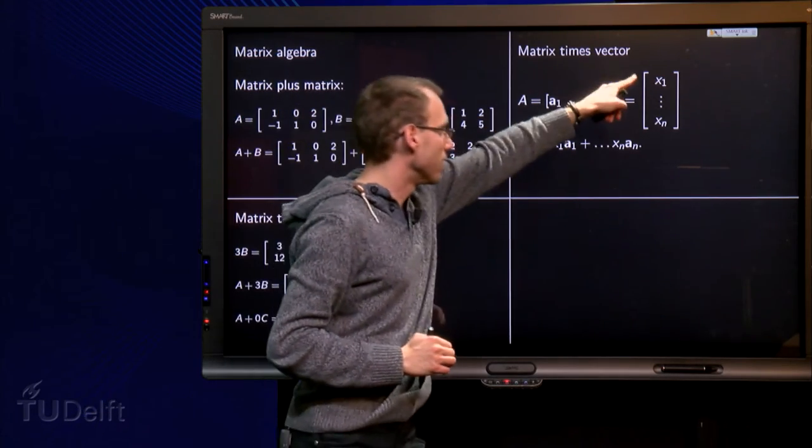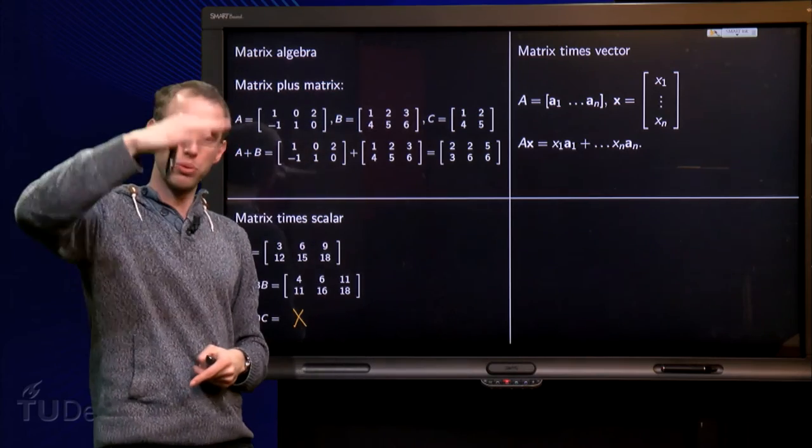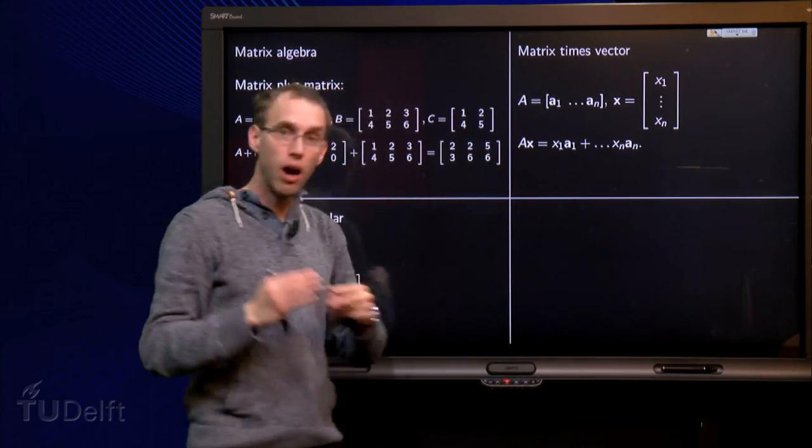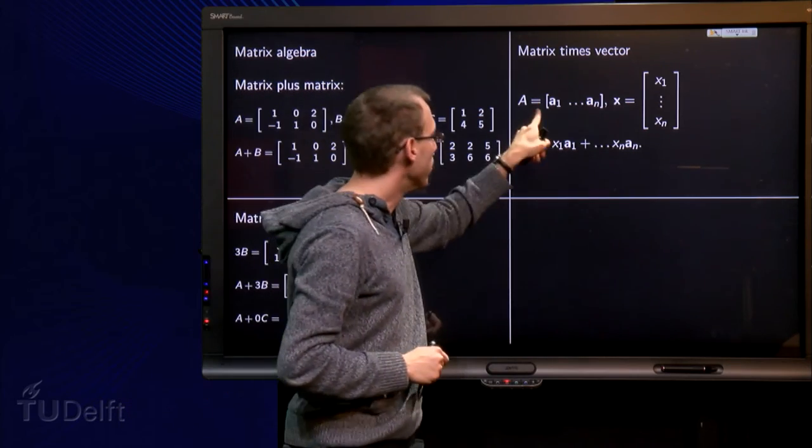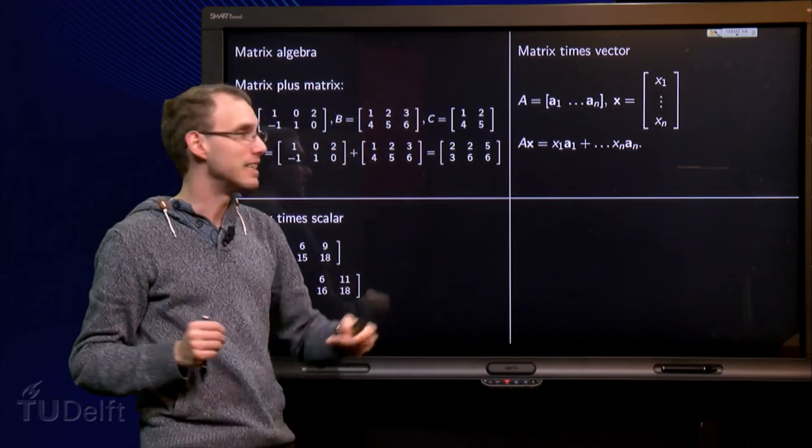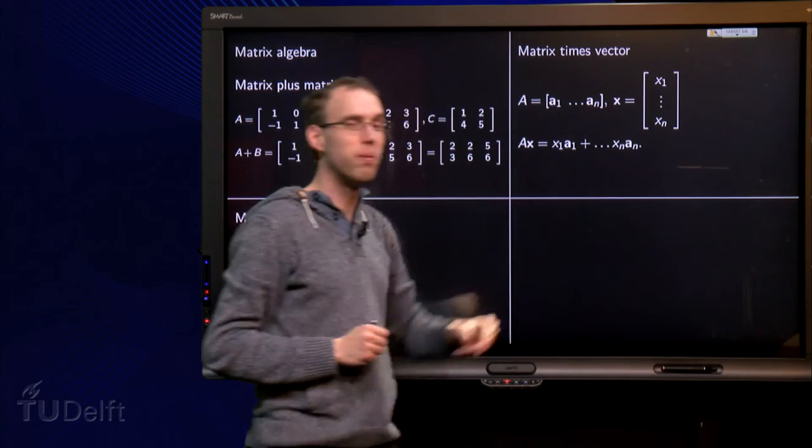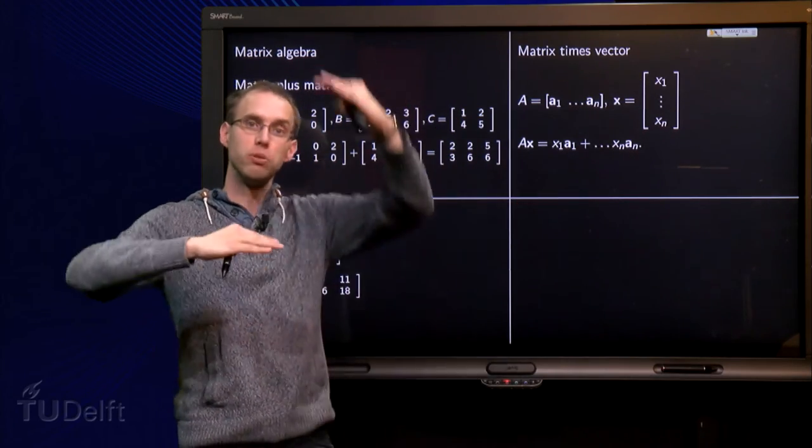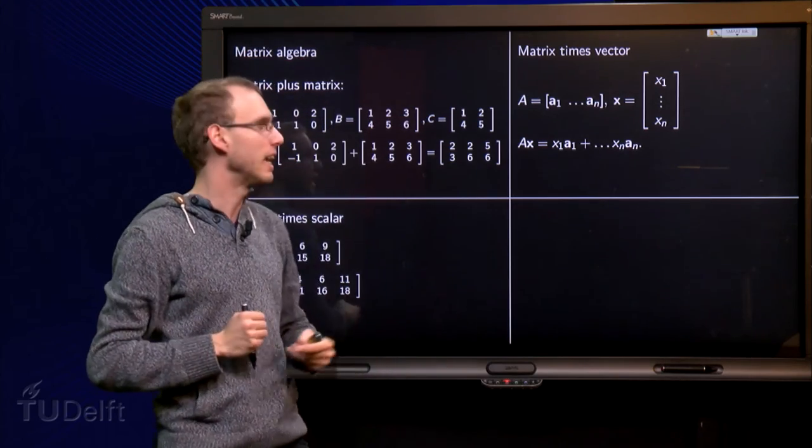And to write X in its components, X1, X2, X3 up to Xn. Well, A times X is only defined if the number of columns of A is the same as the number of components of X. So the width of A should match the height of the vector X.